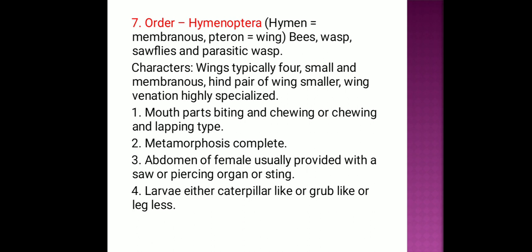Order Hymenoptera: 'Hymeno' means membrane, 'ptera' means wings. Examples: bees, wasps, and sawflies. Character features: small and membranous wings; mouthparts are biting and chewing or biting and lapping types. Metamorphosis is complete. Abdomen of the female is usually provided with a saw, ovipositor, or sting organ. Larvae are either caterpillar-like, grub-like, or legless.